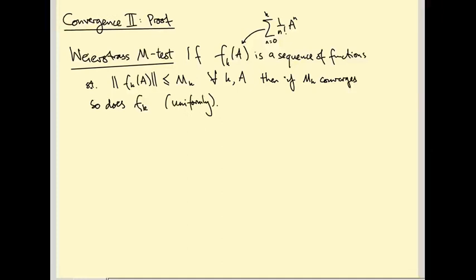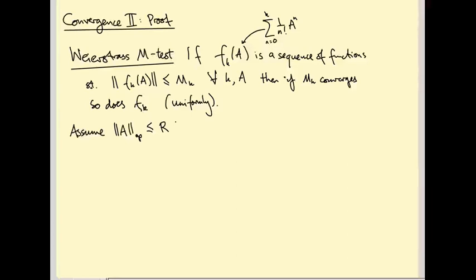So that's what we're going to do: compute the operator norm of this sequence of partial sums and bound them above by something independent of A. The exponential power series doesn't converge uniformly everywhere — only on a bounded set. So we'll assume that the operator norm of A is bounded above by some number R, prove uniform convergence on that set of matrices, and you can take R to be whatever you want.